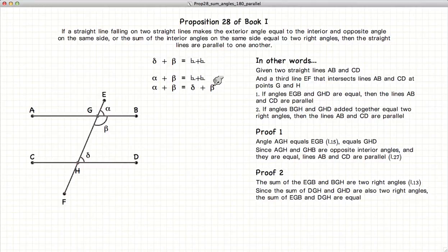All equals being equals. If we cross off beta from both sides of our equation, we end up with alpha is equal to delta. So now we've just demonstrated that alpha is equal to delta.